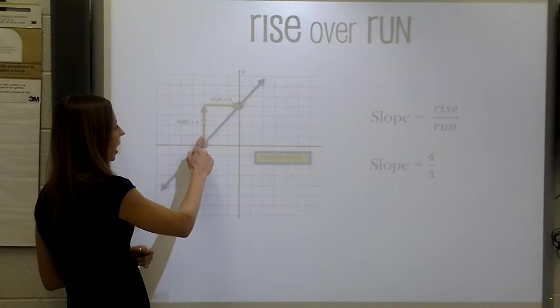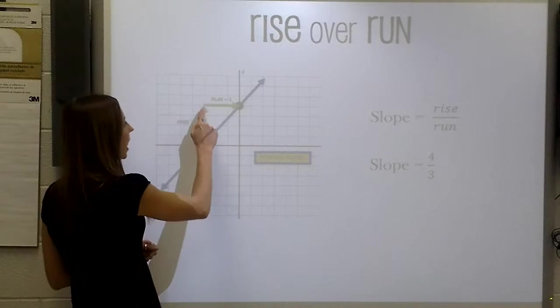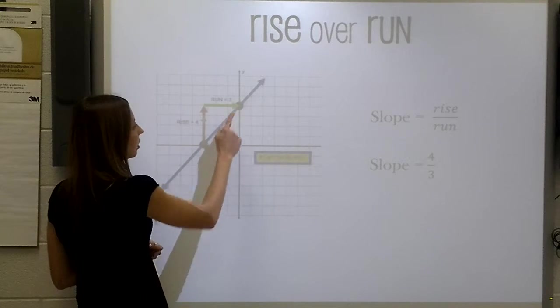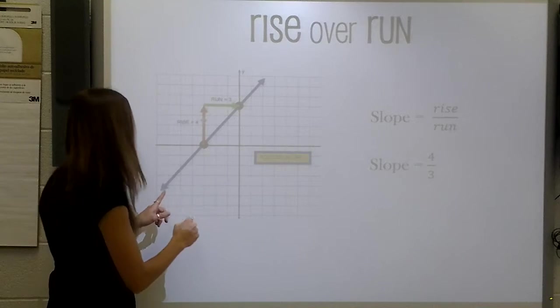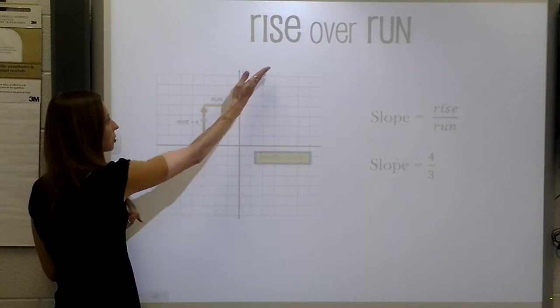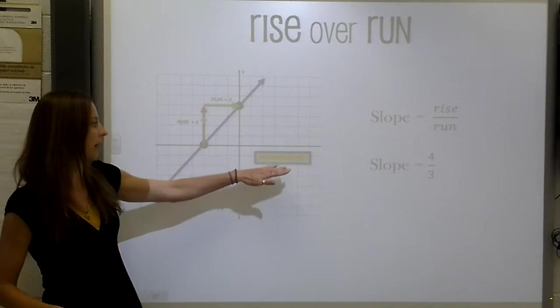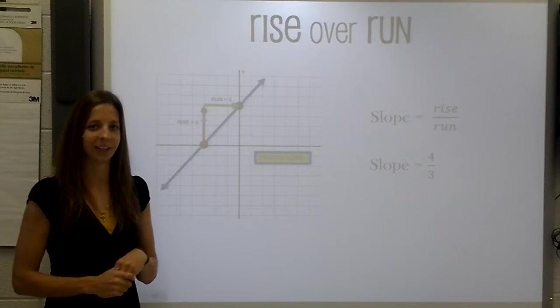So in this example, we rise 4 and we write that on top. And then we run 3 and we put that on bottom. And because we are moving from left to right and our line goes up, we know that we have a positive slope. So therefore, our slope is 4 over 3.